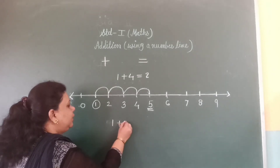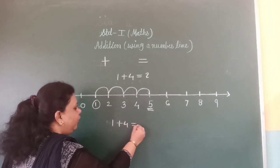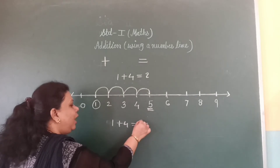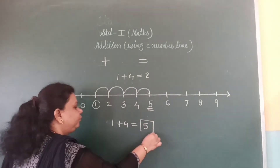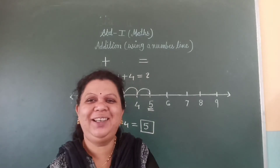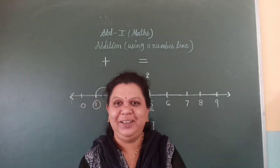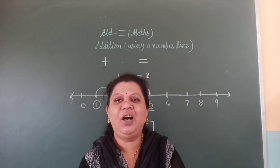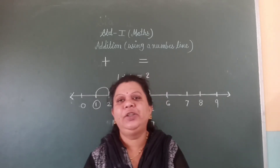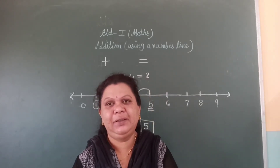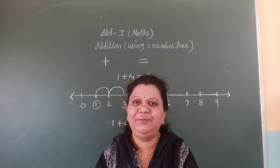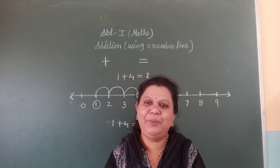1 plus 4 is equal to 5. Understood? Children, in this session you all have learned addition using the number line. See you again in the next session. Thank you. Bye.